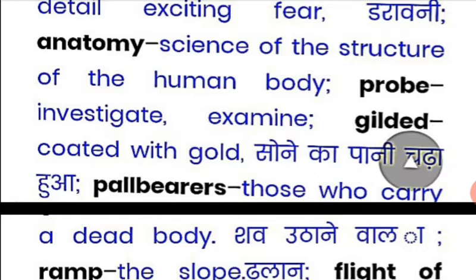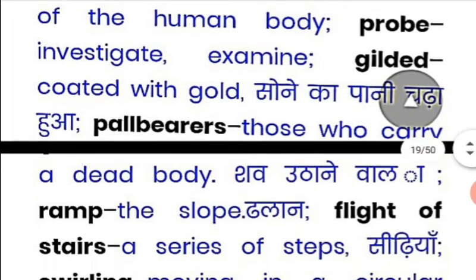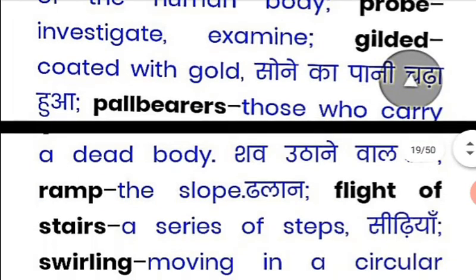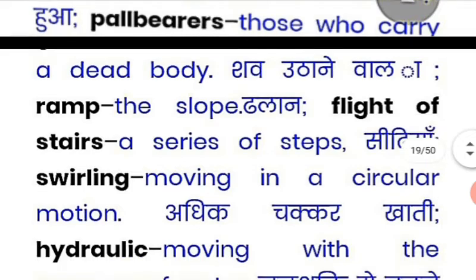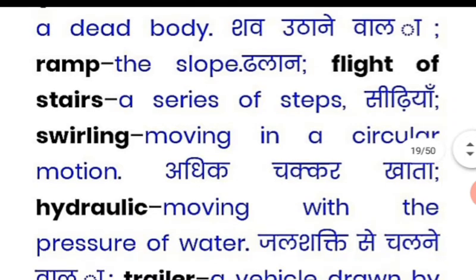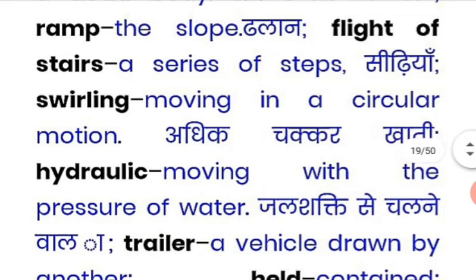'Pallbearer' is the person who carries the dead body. 'Ramp' means slope. 'Flight of stairs' means a staircase. 'Swirling' means moving in a circular motion — going round and round. 'Hydraulic' means operated by water pressure.